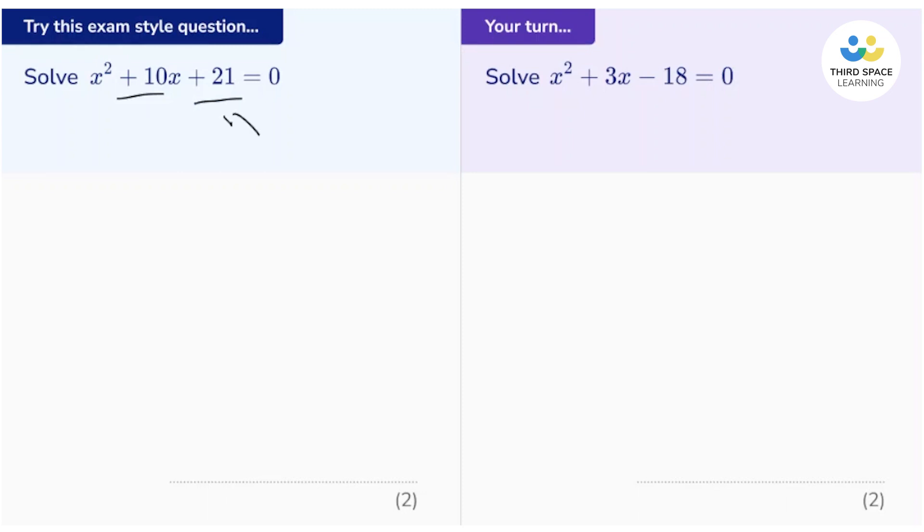So a good way to do this is to write out the factor pairs of positive 21. Well, they're going to be 1, 21, and 3, and 7. Now I've got to pick a pair of these numbers that will add to give 10 and multiply to give 21.